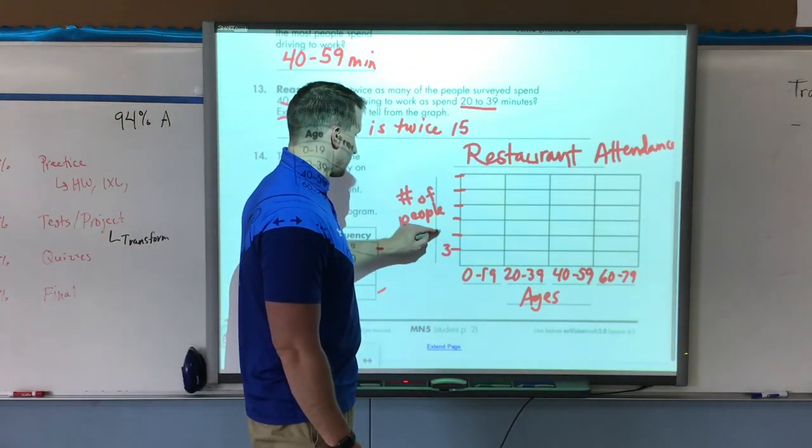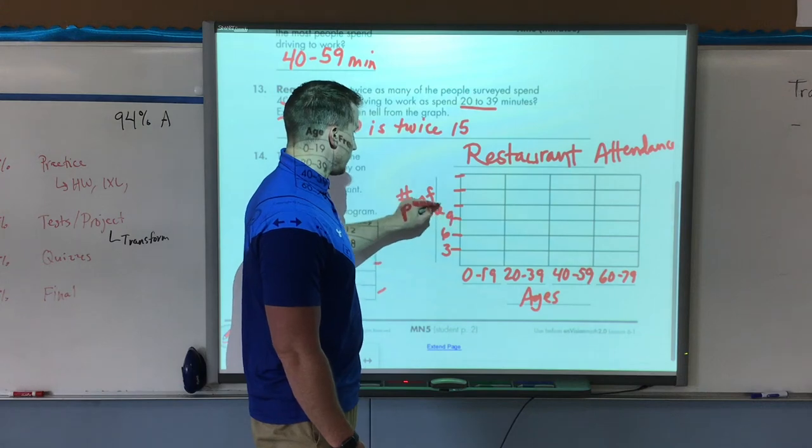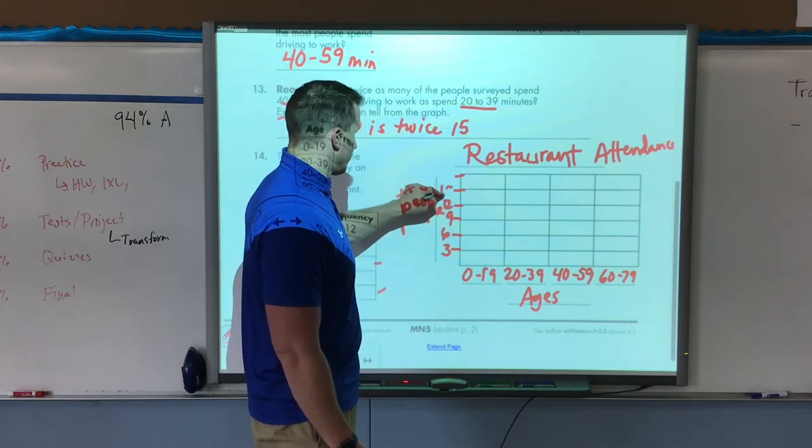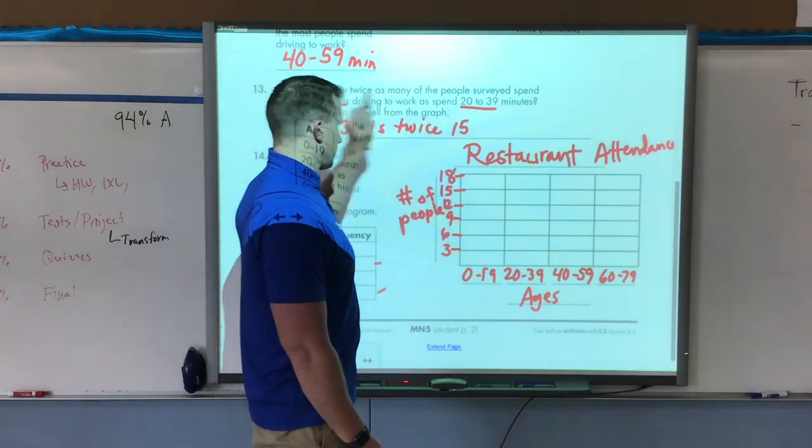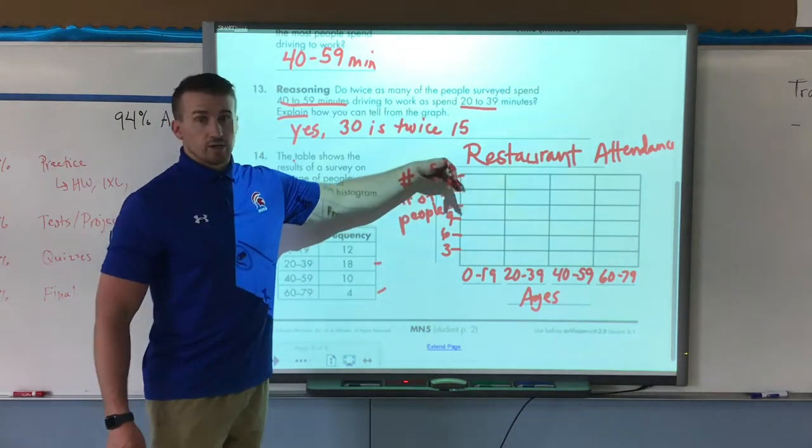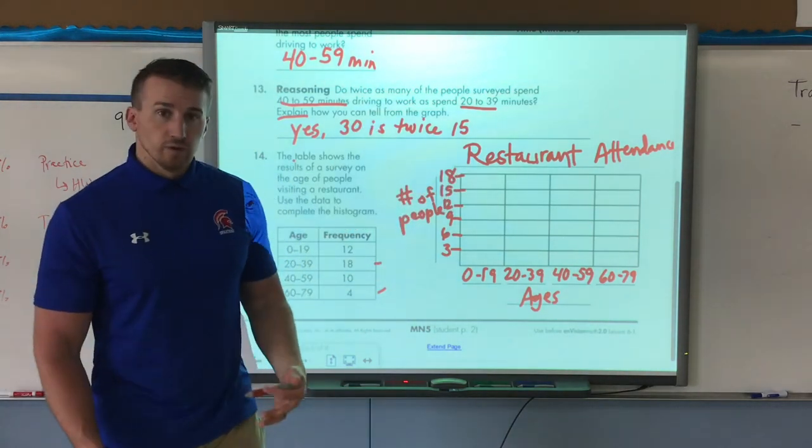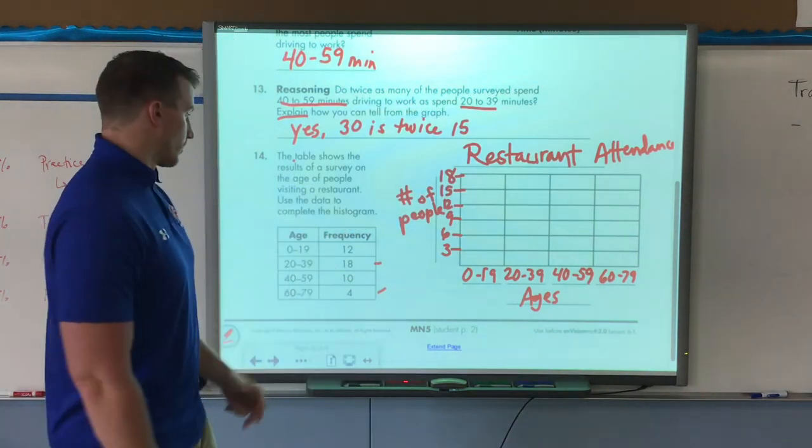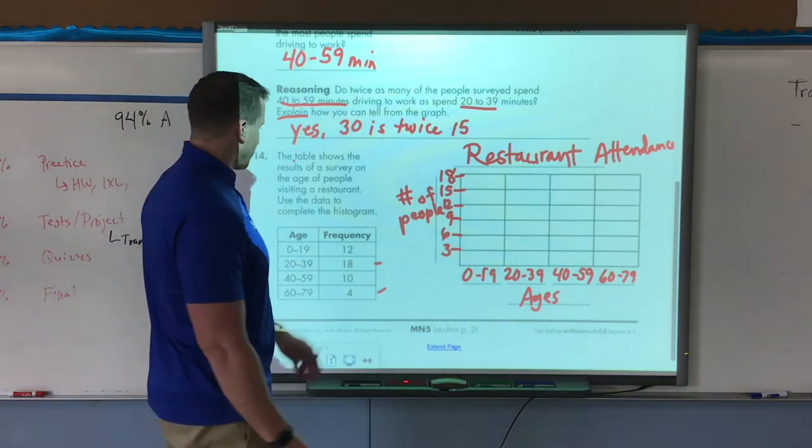As long as I don't have too few for my frequency bars, I'm okay. Now I need to complete it. So 0 to 19 was 12. So I draw my first bar up to 12.